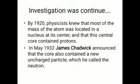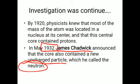Investigations continued, and by 1920, physicists and chemists knew that most of the mass of the atom was located in the nucleus and that this central core contained protons. But after 40 years of research, in 1932, James Chadwick announced that the nucleus also contains an uncharged or neutral particle, which he called the neutron.